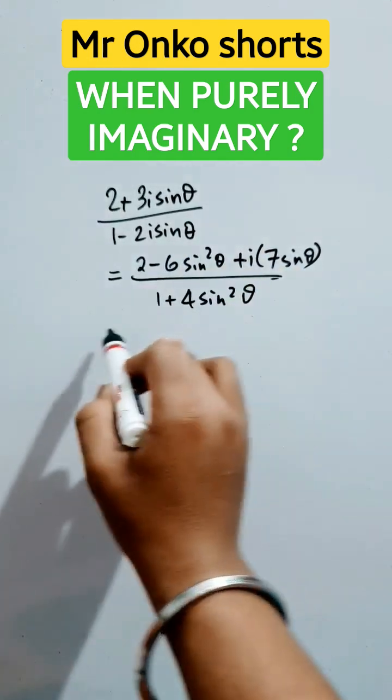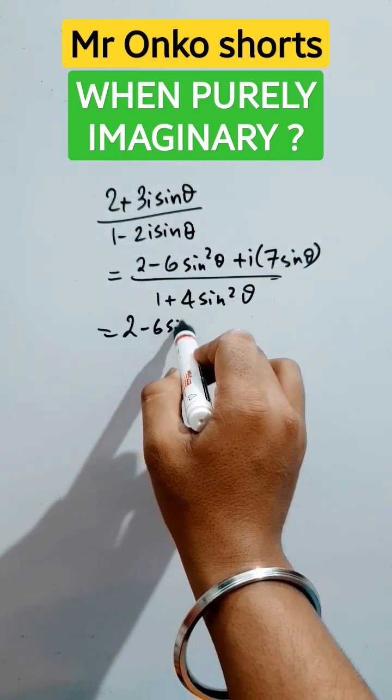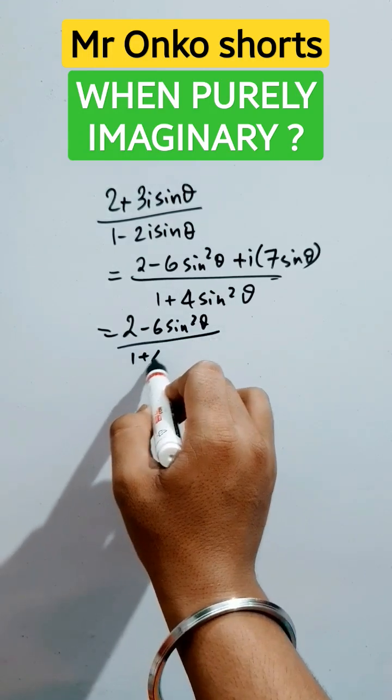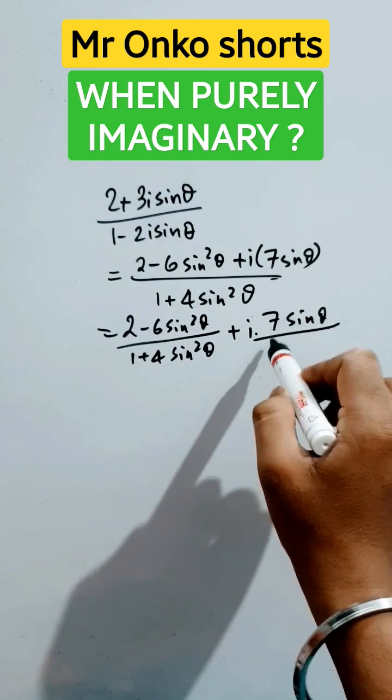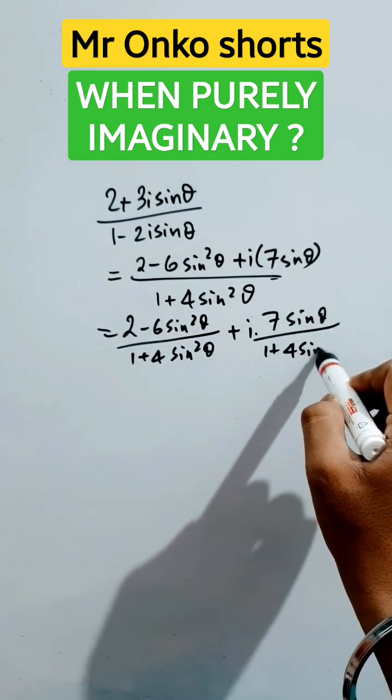Now, the real part is 2 minus 6 sin squared theta over 1 plus 4 sin squared theta, and the imaginary part is i times 7 sin theta over 1 plus 4 sin squared theta.